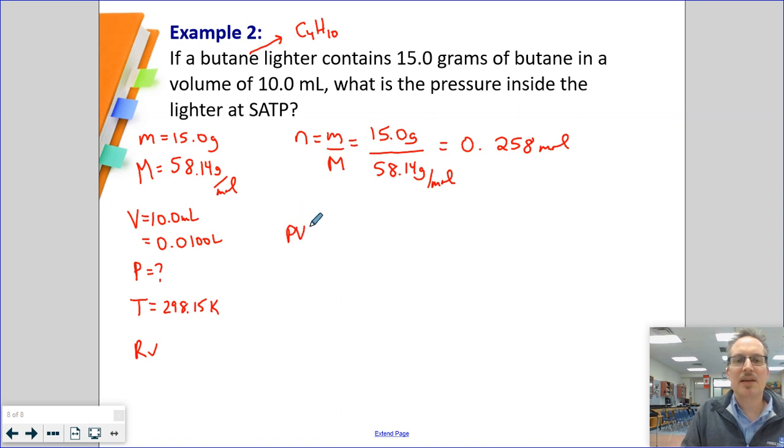Step number two, I've got PV equals NRT. This time I'm solving for P, so I'm going to move volume to the denominator. P equals NRT over V.